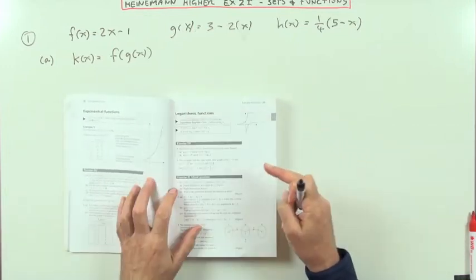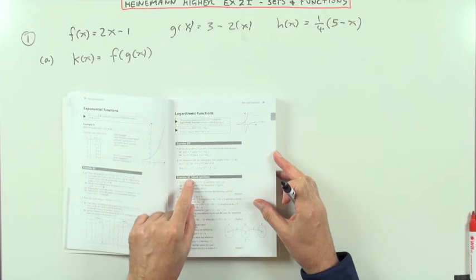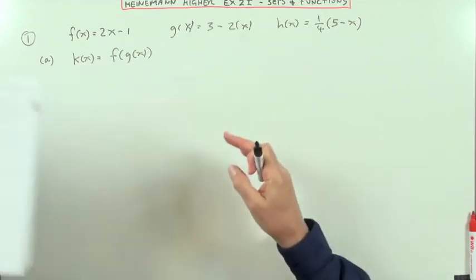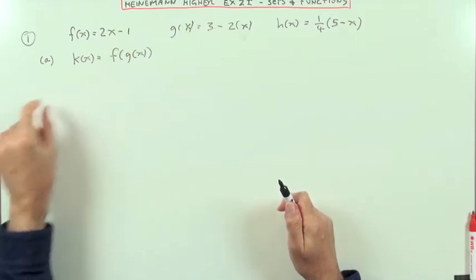The Heinemann Heyer book, second chapter, Sets and Functions, Mixed Exercise 2i. The first one, you're given three functions f, g and h, and you define this fourth one k, which is a composition of the two.